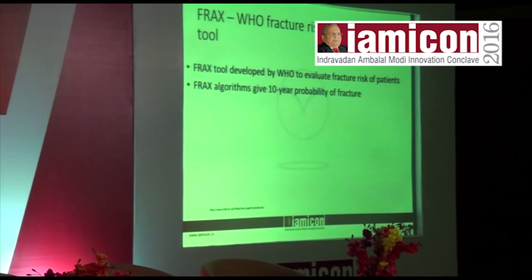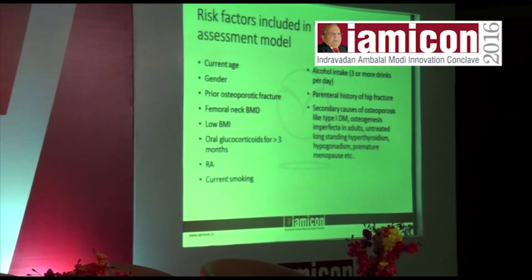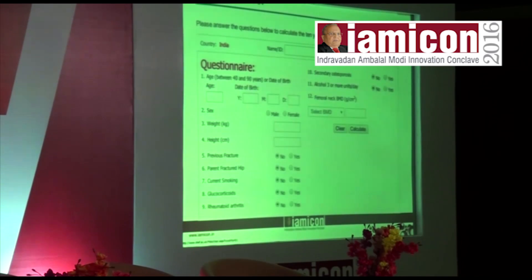FRAX: the WHO fracture risk assessment tool. The FRAX algorithm gives the 10-year probability of fracture. Risk factors included are: current age, gender, prior osteoporotic fracture, femoral neck bone mineral density, low BMI, oral glucocorticoids for greater than 3 months, rheumatoid arthritis, smoking, alcoholism, parental history of hip fracture, and secondary causes of osteoporosis such as type 1 diabetes mellitus, osteogenesis imperfecta, untreated long-standing hypothyroidism, hypogonadism, and premature menopause. There is a questionnaire-based calculation tool to assist in this 10-year fracture probability assessment.